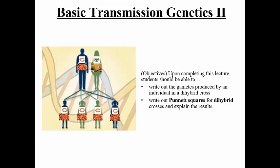Today's lecture is Basic Transmission Genetics II. There are two objectives for today. First, I want to show you how to write out gametes produced by an individual for a dihybrid cross — remember, dihybrid cross means a cross involving two genes. Second, I'd like to show you how to write out Punnett squares for a dihybrid cross, explain the results, and predict the offspring that would result from such a cross.